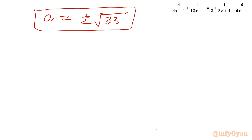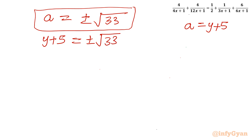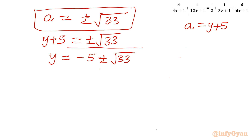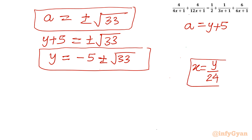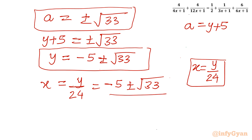Now recalling our substitutions: a = y+5, so y+5 = ±√33, giving y = −5 ± √33. And since x = y/24, we get x = (−5 ± √33) / 24.